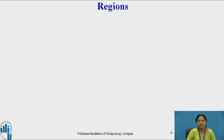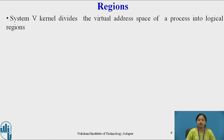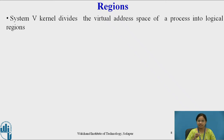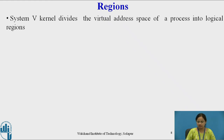Now let us look at regions. A region is nothing but a contiguous virtual address space of a process. In System V, the kernel divides the virtual address space of a process into two logical regions, and those regions can be shared or protected.